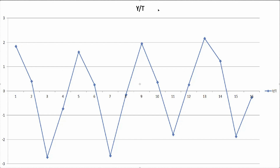Now, since y equals trend times cyclicality times the error term, what we're going to do is divide out the trend. We calculated the trend, so we're going to create a new column which is y divided by trend. This gives you your cyclical components and error terms. If you plot these, you'll get the cyclical component, and you can see we seem to have an annual effect — quarter 1 of the first year, quarter 1 of the second year, third year, fourth year.